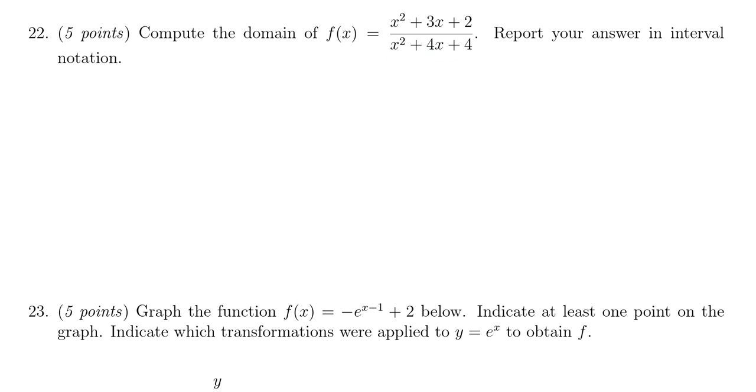To find the domain of a rational function, it really just comes down to what makes the denominator go to zero. So we have to factor the polynomial x² + 4x + 4 and set it equal to zero.